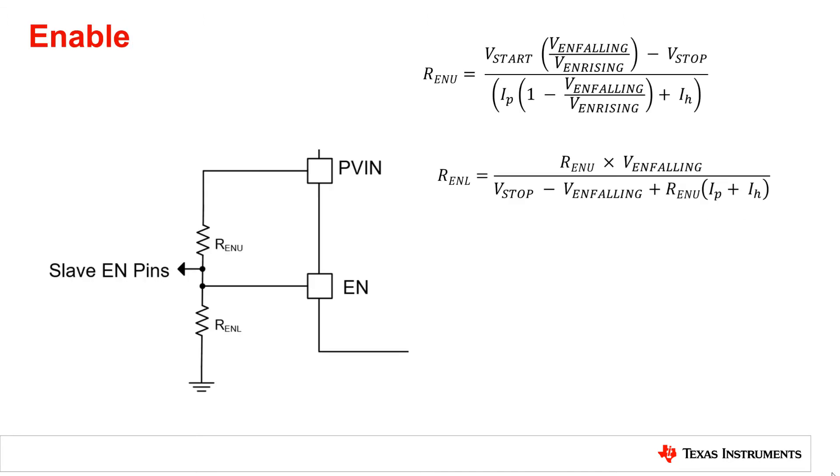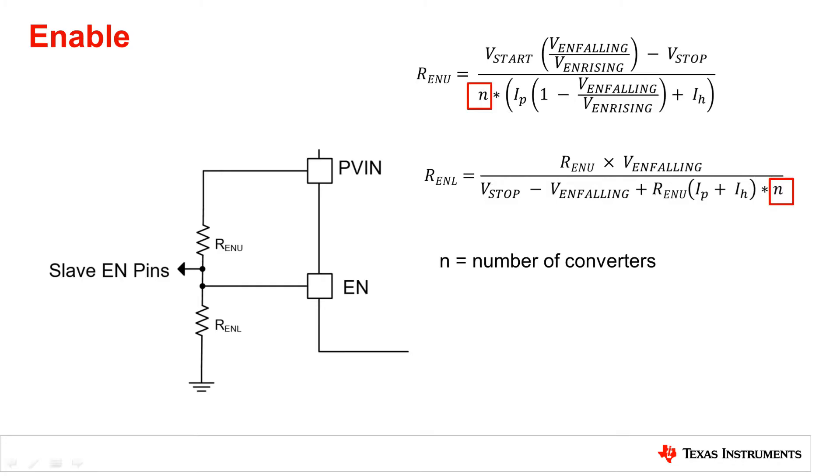The second change is to the enable resistor equations. Multiplying the currents by n, the number of converters, allows one to properly calculate the resistors needed in order to set the proper UVLO.